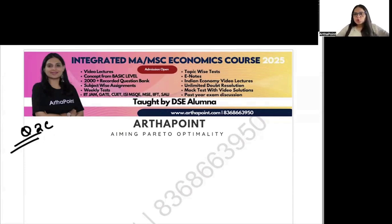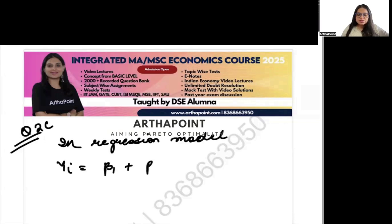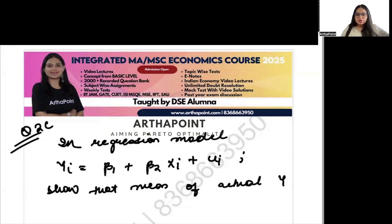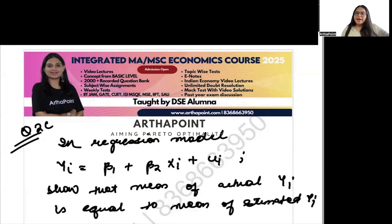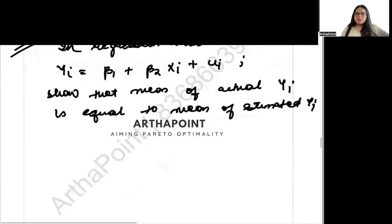Let us look at question number 2c of 2019 paper. It says that in regression model, it has come for three marks. In regression model, yi is equal to beta 1 plus beta 2 xi plus ui. Show that the mean of actual yi is equal to mean of estimated yi.